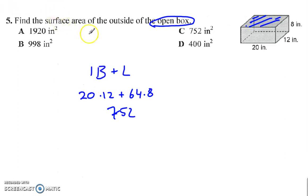We want to find the surface area of the outside of an open box. Make sure you're reading these questions closely. The box is open. That means there's no top to it. So there's only one base plus the lateral area. So that's 20 times 12 plus the lateral area perimeter times the height, 64 times 8, 752.